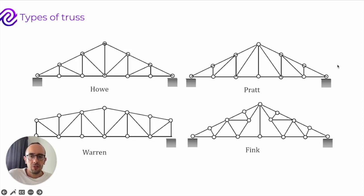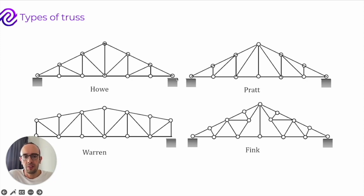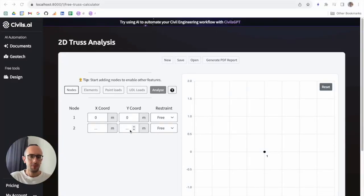You'll often see different types of trusses in the world — there are some common patterns that you'll see. These Howl trusses are very common; you'll see them on a lot of rail bridges and even on roofing designs, but there are other common designs that get used as well.